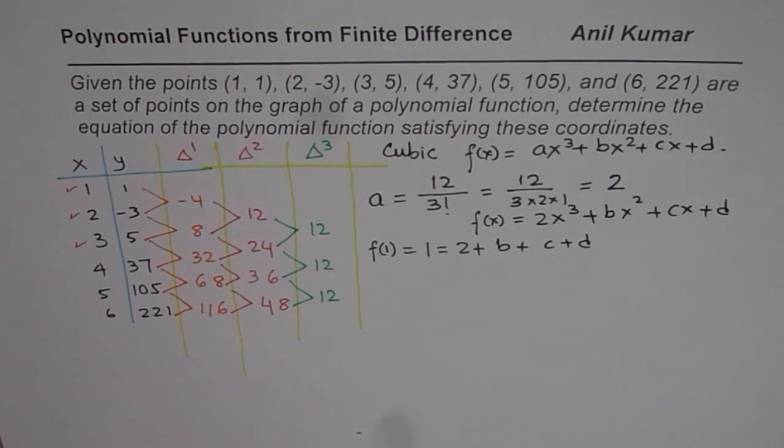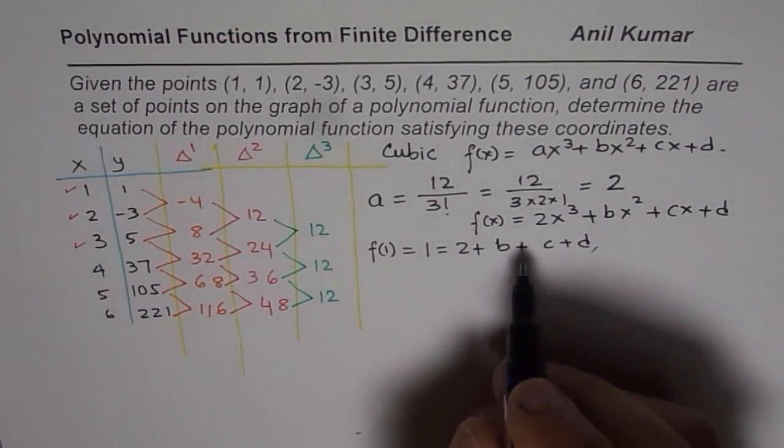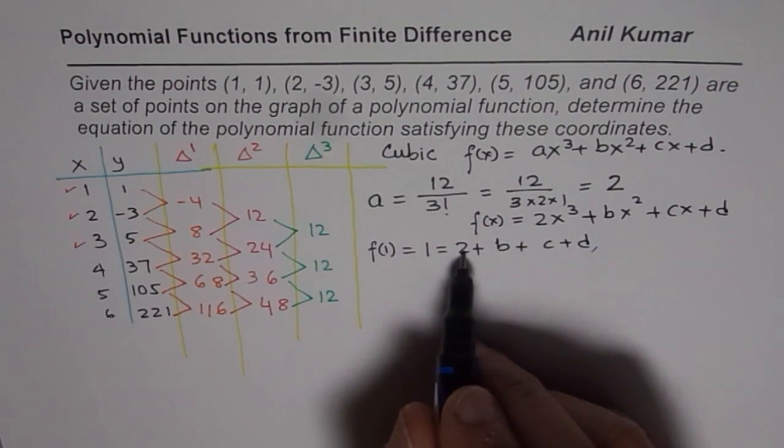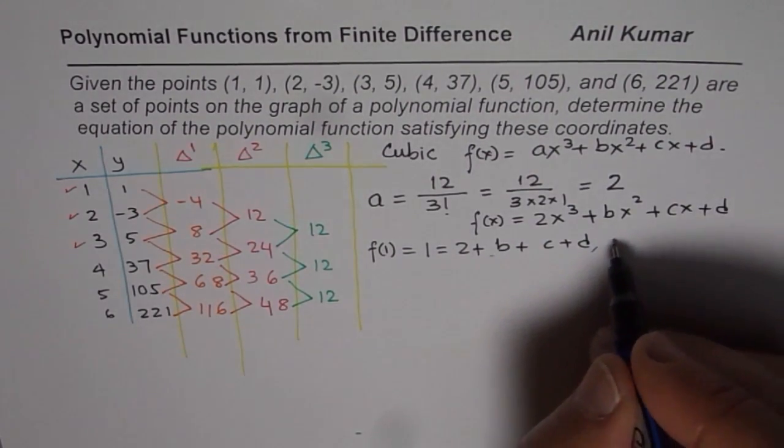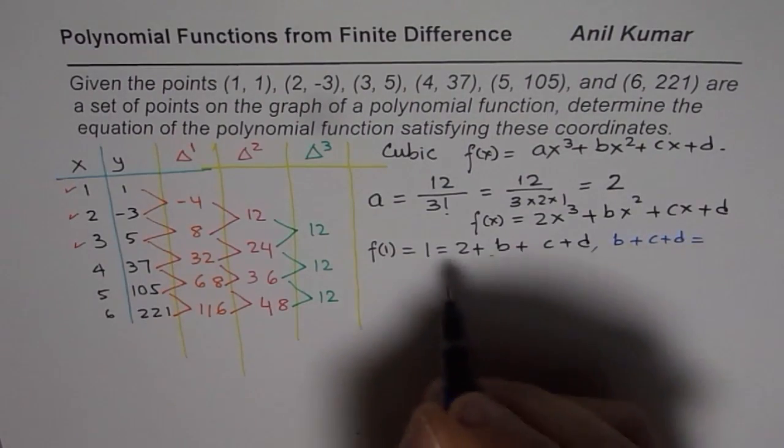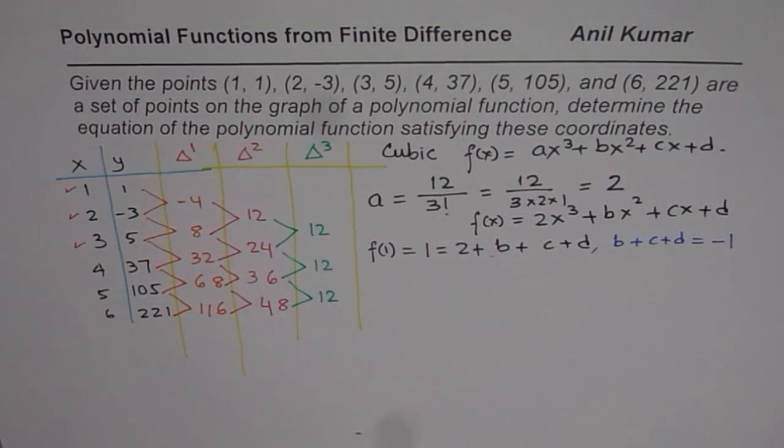This equation I can rearrange. So once I rearrange, I could write this as b + c + d equals 1 minus 2, which is -1.